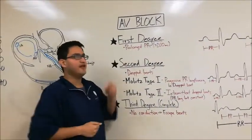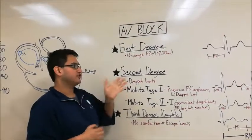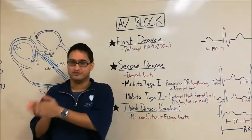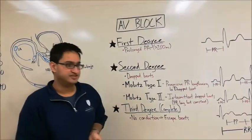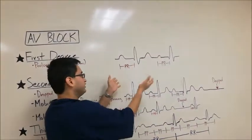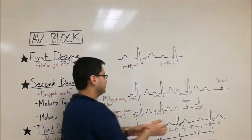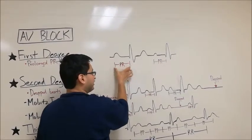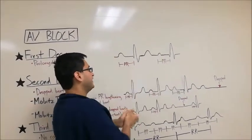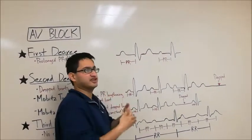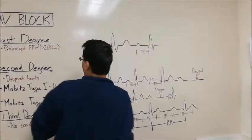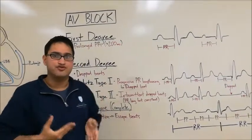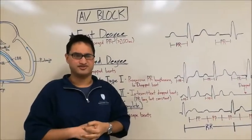So in first degree AV block, your PR interval is prolonged and is greater than 200 milliseconds. Now normally, your PR interval should be between 120 and 200 milliseconds. But in this case, it should be greater. And here we have an example of what that might look like. Obviously we don't have units here, but this definitely looks like a prolonged PR interval. Note that the PR interval extends from the start of the P wave here to the start of the QRS complex here. So that's the PR interval and here it's prolonged. However, across wave to wave, the PR interval does not change. It stays prolonged, but it stays at a constant length from here to here. So that's the hallmark of a first degree AV block. Now in this case, even though conduction slowed through the AV node, it still ultimately gets transmitted to the ventricles. So there's no skip beats.